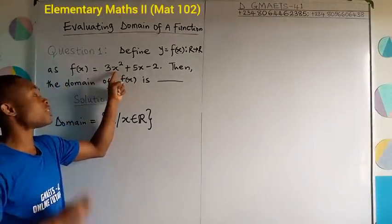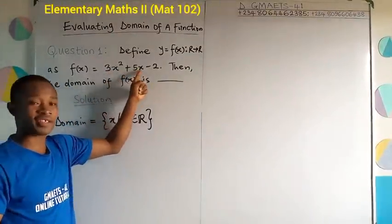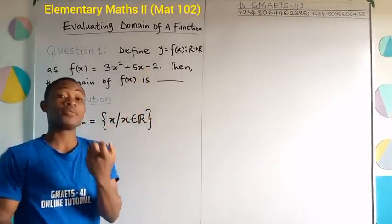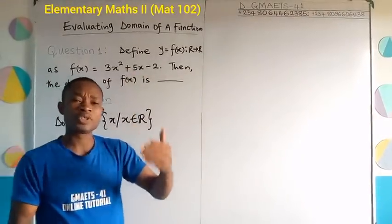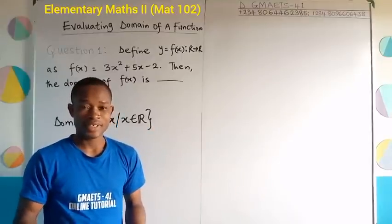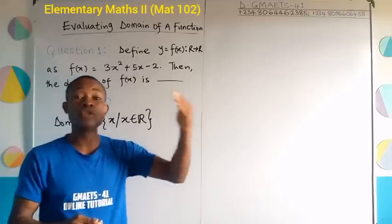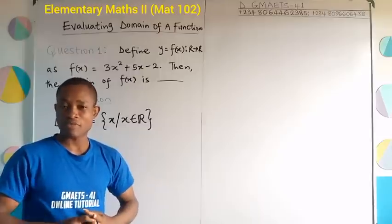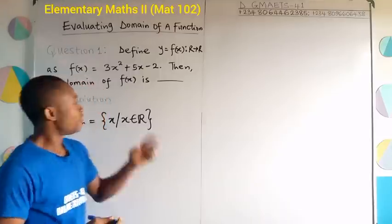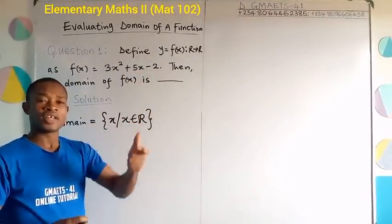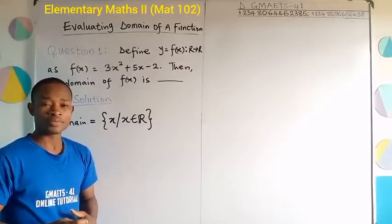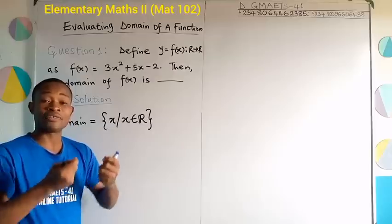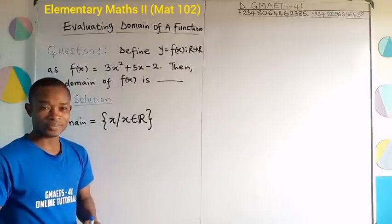For example, if you fix 0 in for x: 3 × 0² = 0, 5 × 0 = 0, so 0 + 0 - 2 = -2. You picked 0, a real number, fixed it for x, and it produced -2, which is also a real number. Therefore 0 is part of the domain of this function. Why not pause the video and test another number? Select any number, fix it in for x, simplify, and post your results in the comment section — you will still get a real number.